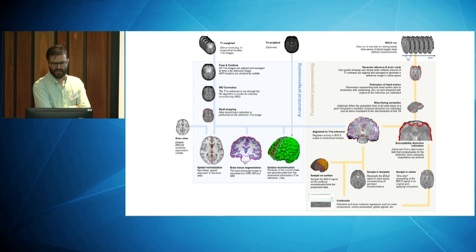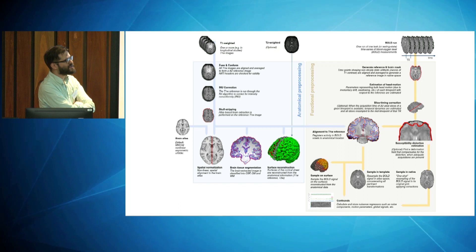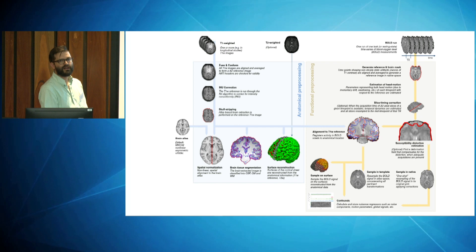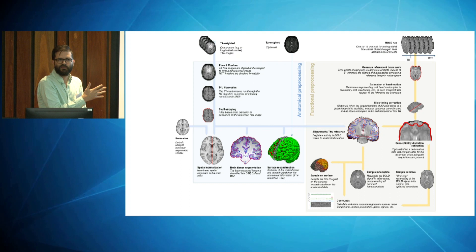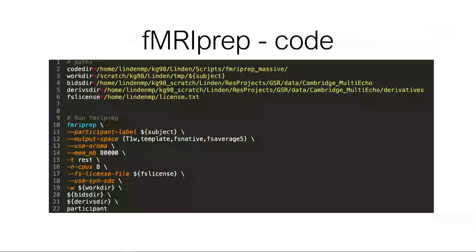This is a big overview of the minimal processing steps. You take your imaging data in BIDS format — we convert it pretty much directly from the scanner — then send it to fMRIPrep, which has all these steps going from top to bottom. You have an anatomical pre-processing pipeline and a functional pre-processing pipeline, all done automatically. You can switch things on or off, which is really quite amazing. Let me show you an example of what it gives you in the end.